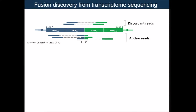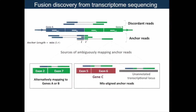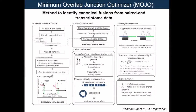One of the main challenges in fusion discovery is the high false positive rate. This is primarily because of misalignment of reads to the fusion junction, and this can happen in several different ways. A read mapping to this junction can align to one of the two genes of the fusion incompletely, or it can align to another gene called gene C, or it can align to another transcriptional locus. These artifacts are incredibly hard to computationally identify. We attempted to control for some of these artifacts, and we implemented this approach in a method called MOJO. This identifies fusions between canonical exonic junctions.